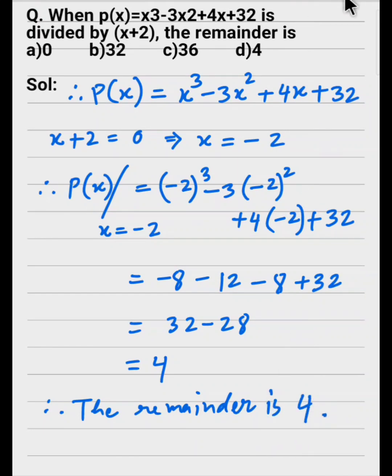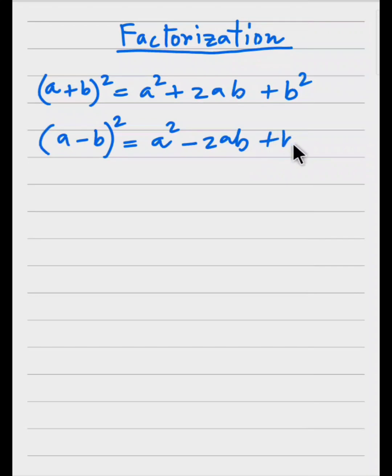Thank you guys. Next, let's go to some factorization formulas. (a+b)² equals a² plus 2ab plus b². And (a-b)² equals a² minus 2ab plus b². And a² minus b² equals (a+b) times (a-b). This is the formula.